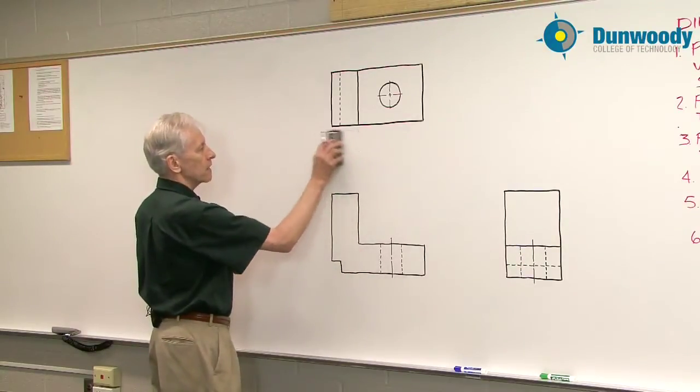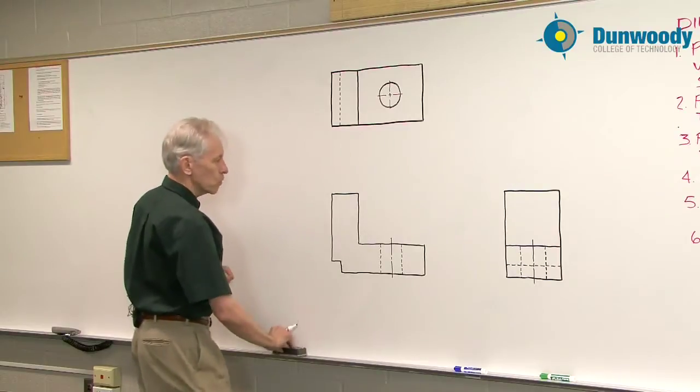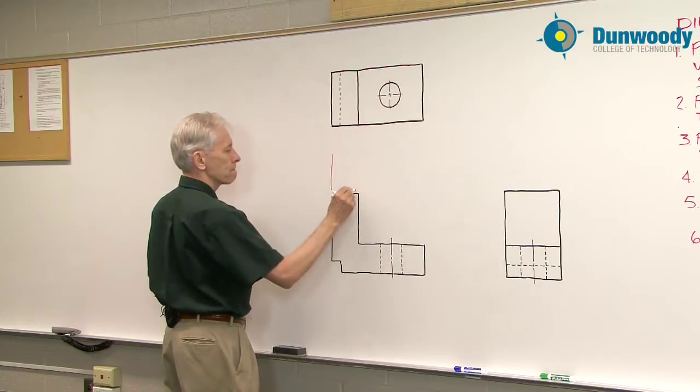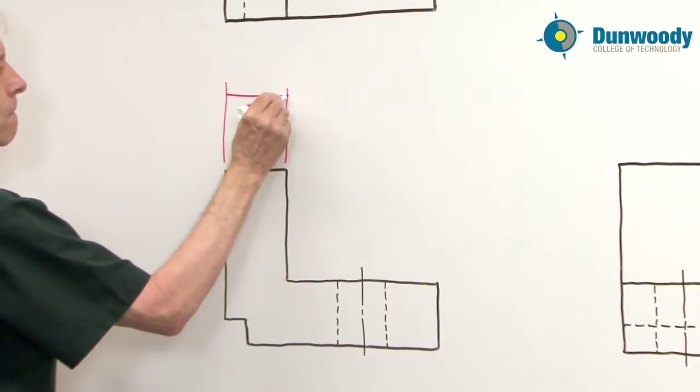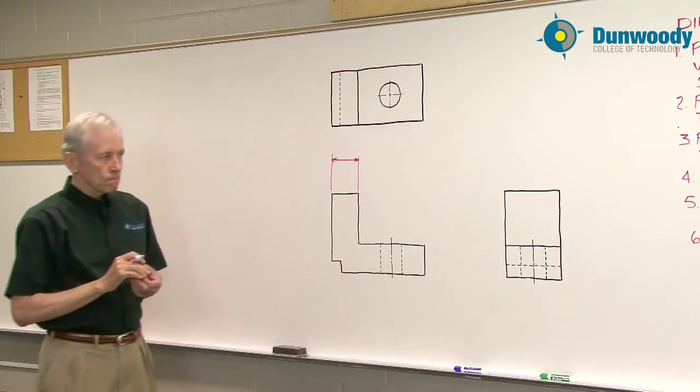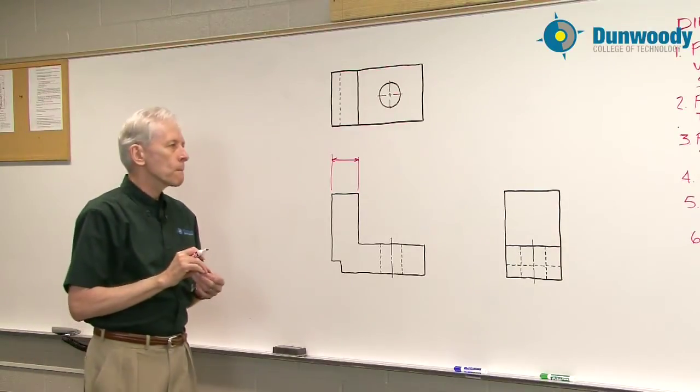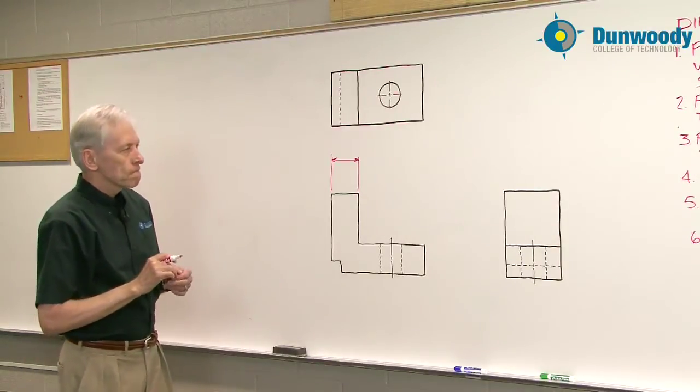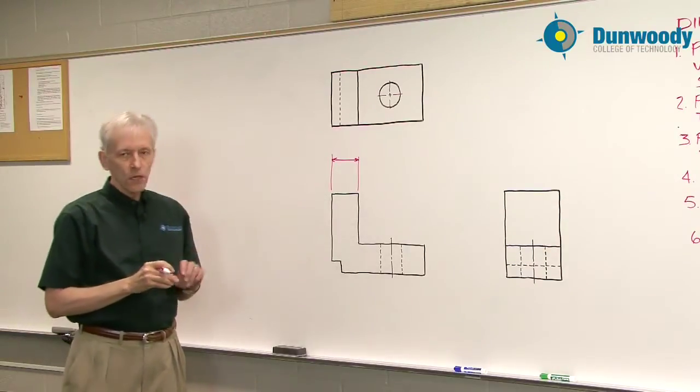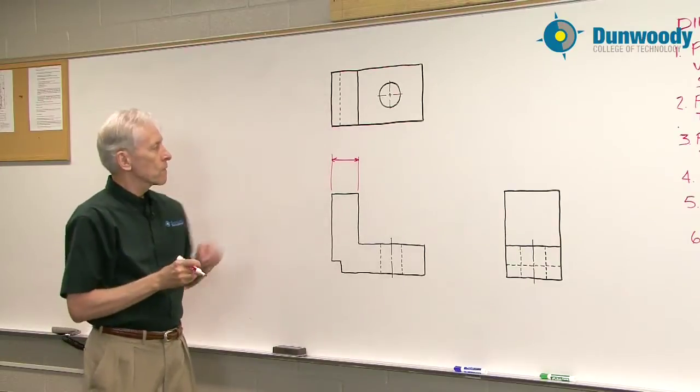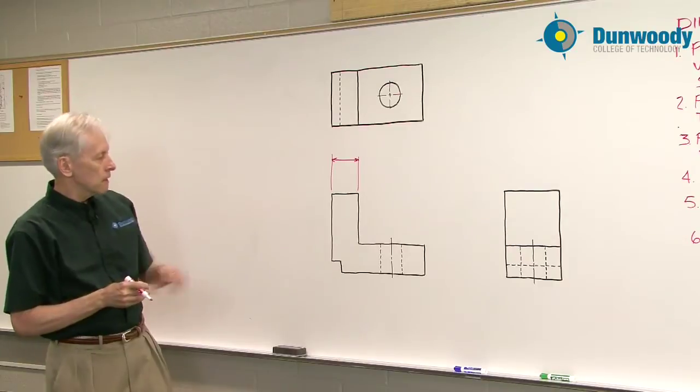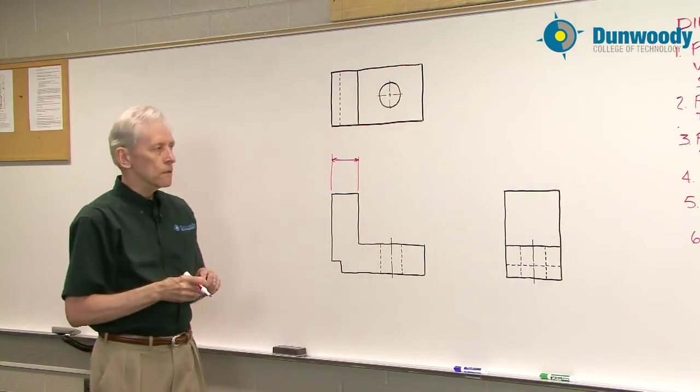So following that guideline, what I would do is move that dimension to this view. So this is a better choice. This shows the shape much better than this. Up here, it's just a flat plane here. It has more dimensional qualities.